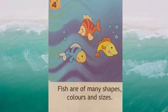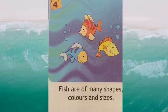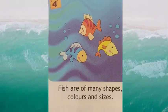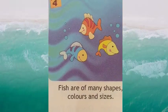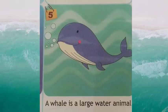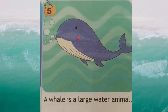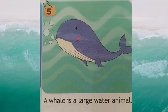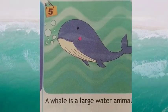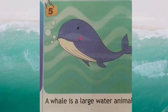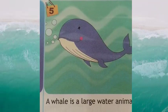Box number four: fish are of many shapes, colors and sizes. Fish bahut saari shapes ki, colors ki aur sizes ki hoti hain. Box number five: a whale is a large water animal. Whale jo hota hai wo water ka bada animal hai.